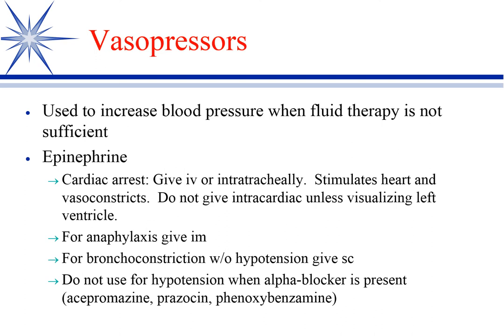Remember, epinephrine stimulates beta-1, beta-2, and alpha receptors — all three. In the muscle, you mostly have beta-2 receptors, which are vasodilatory. So when you give it in the muscle, those beta-2s are going to vasodilate and you're going to get pretty rapid absorption.